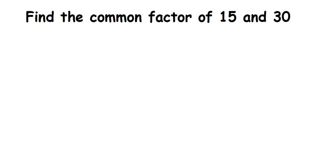Here's a question on common factors: find the common factors of 15 and 30. Factors are the numbers by which a given number is divisible. For example, 15 is divisible by 1, 3, and 5, so 1, 3, and 5 are factors of 15. Similarly, we have to find the factors of 30.